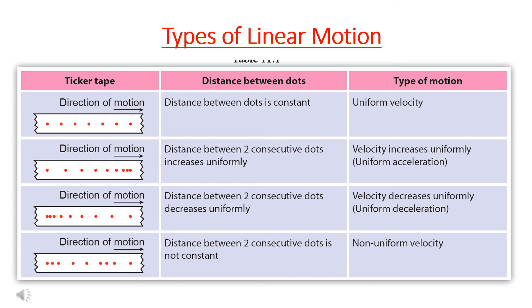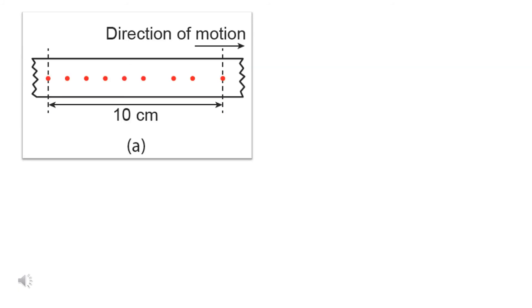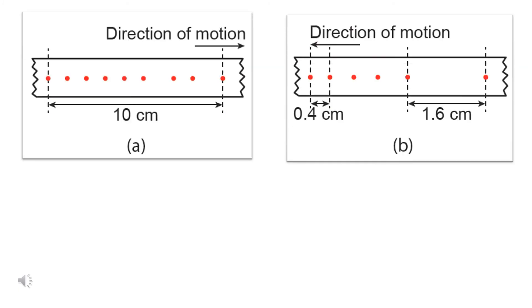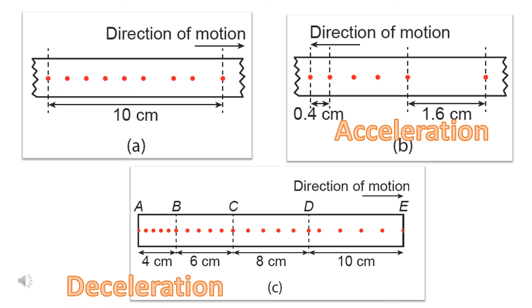Finally, if the distance between two consecutive dots is not constant, the motion is called non-uniform velocity. Observe ticker tape A, ticker tape B, and ticker tape C. What is the type of linear motion for each ticker tape? Which ticker tape has acceleration? Which ticker tape has deceleration?